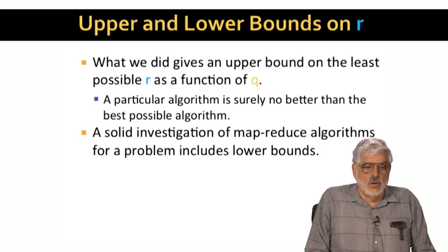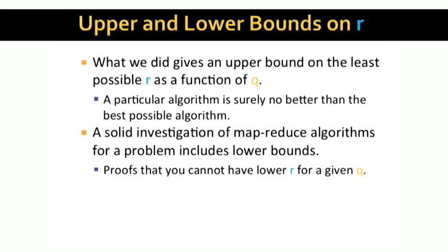The analogy would be sorting on a serial machine. We have algorithms like merge sort that take n log n time on input of size n. That's good to know. But it only becomes impressive because we also have an n log n lower bound on any algorithm that does general sorting. So what we want to address now is how one could go about proving that R cannot be less than a certain function of Q.